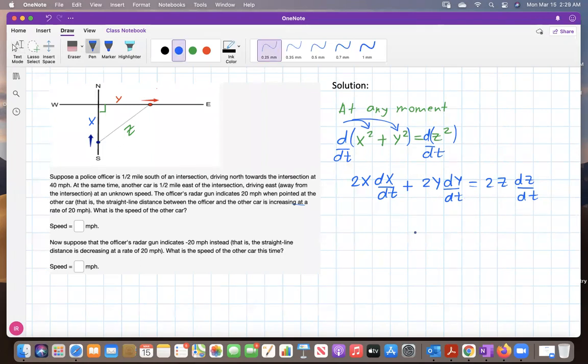So now let's substitute what we have and find what we don't have. We have x equal to one half. dx/dt is the speed of the officer's car. Notice x throughout time is decreasing over time. According to this information, that is 40 miles per hour, but since x is decreasing over time, this should be -40 miles per hour.